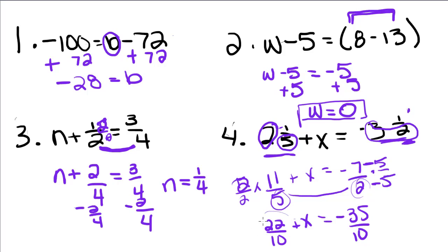So now, since this is addition, we are going to subtract 22 tenths from both sides, and we're going to be left with negative 35 minus 22, which is negative 57 over 10. x is equal to negative 57 tenths.